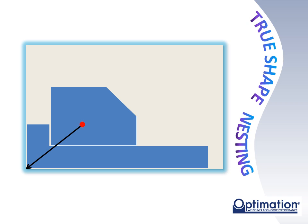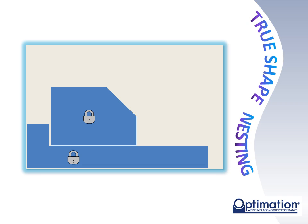Often this datum is the lower left corner of the raw material. This is why true shape nesting is sometimes referred to as half shape nesting, since it is only paying attention to the two sides of the shape — the bottom and left side — that are facing the parts already on the nest. This method is significantly more efficient than rectangular nesting. However, it does have its limitations. Once a part is on the nest, its placement is not usually evaluated further.